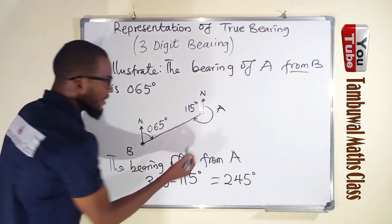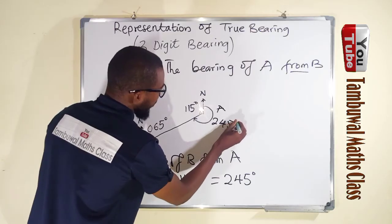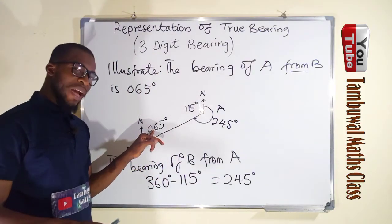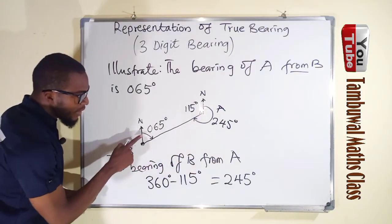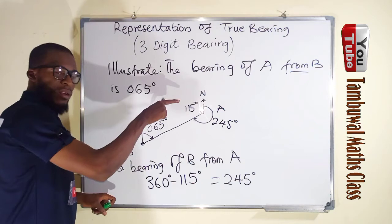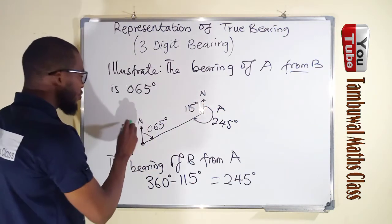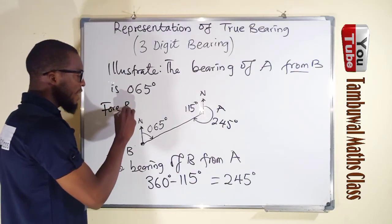So what is the relationship between, let me write this angle here, 245 degrees. So what is the relationship between this bearing and this other bearing? If you look at this angle, it is going forward while this one is coming backward. So this angle that is going forward is known as forward bearing.